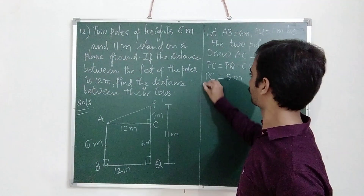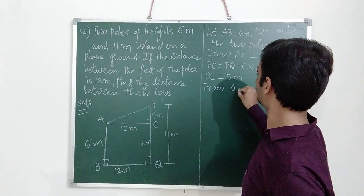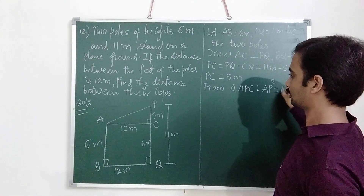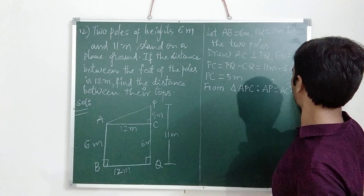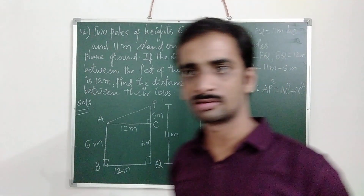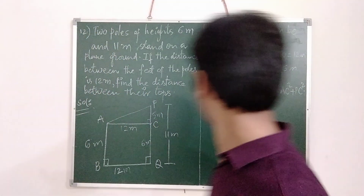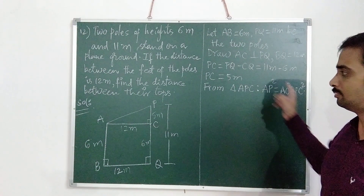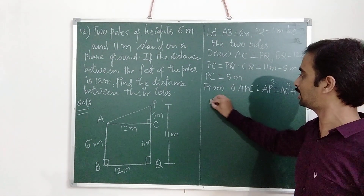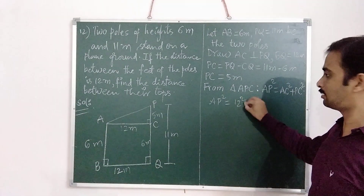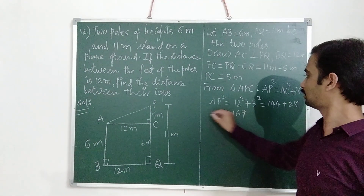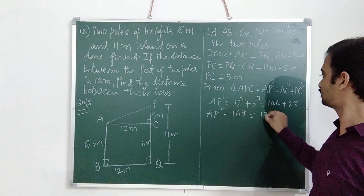From triangle APC, by the Pythagorean theorem: AP² = AC² + PC². AC is 12m and PC is 5m. So AP² = 12² + 5² = 144 + 25 = 169. Therefore AP² = 169, which means AP = 13m.